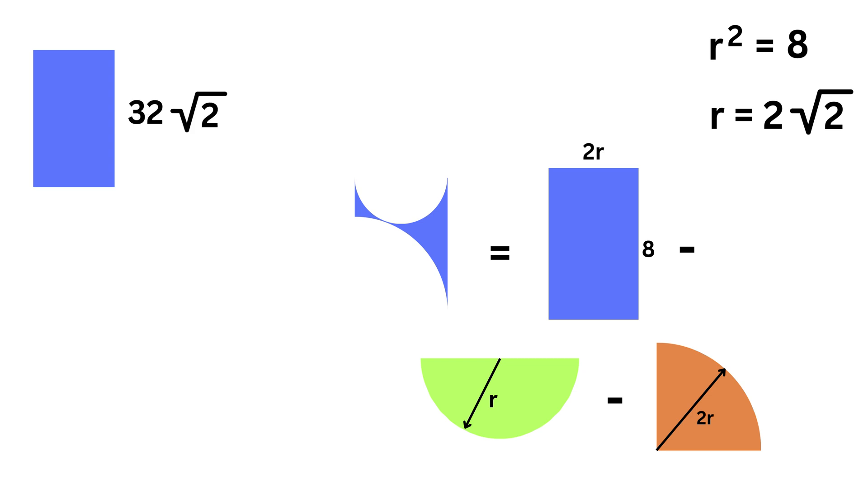Then the area of this semicircle equals pi r square by 2 or pi times 8 by 2 or 4 pi.